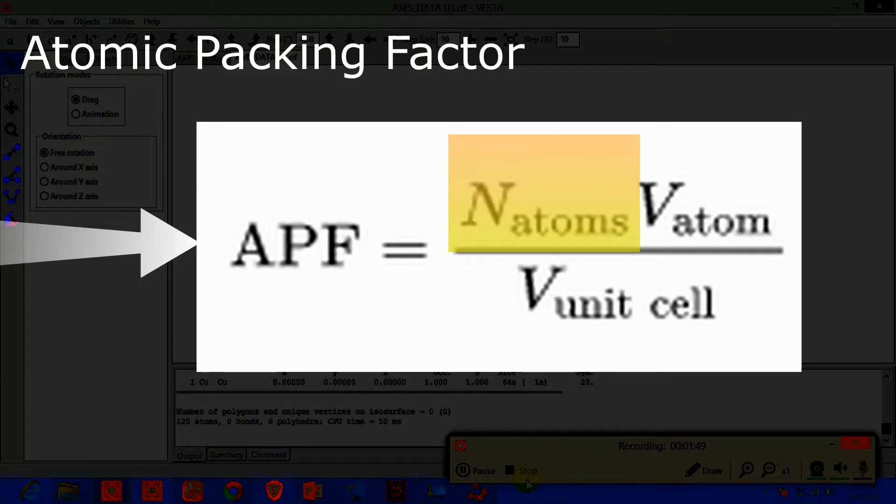In this equation, N represents the number of atoms in unit cell, where Va represents the volume of atom and Vp represents the volume of unit cell.